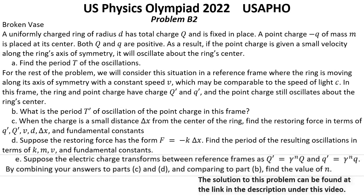Question C: When the charge is a small distance dx from the center of the ring, find the restoring force in terms of small Q', big Q', V, D, dx, and the fundamental constants. Question D: Suppose the restoring force has the form F = −K·dx. Find the period of the resulting oscillations in terms of K', M', V, and the fundamental constants.